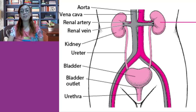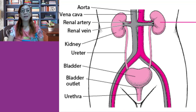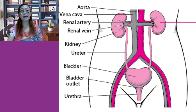The urinary bladder is a smooth, collapsible muscular sac that stores urine temporarily. It is located retroperitoneally in the pelvis, just posterior to the symphysis pubis. The detrusor muscle and the transitional epithelium both make the bladder uniquely suited for urine storage. The smooth triangular region of the bladder outlined by the three openings is called the trigone, where infections tend to persist. The bladder wall contains three layers of smooth muscle collectively called the detrusor muscle, and its mucosa is a special type called transitional epithelium.